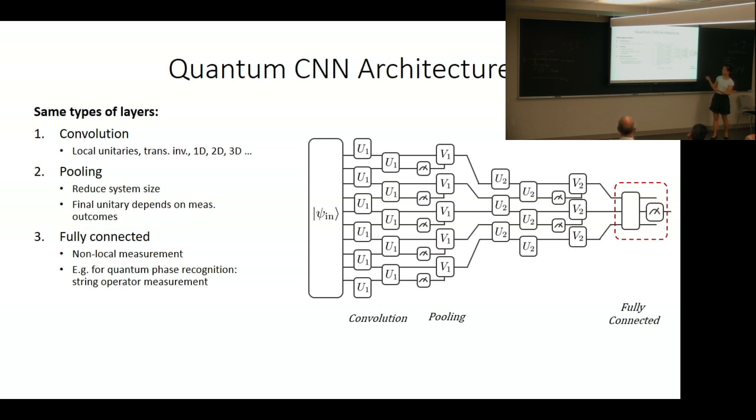In comparison to having a general n-qubit unitary acting on the input state, because of these translation-invariant constraints, there are much fewer parameters in the unitaries in this circuit.